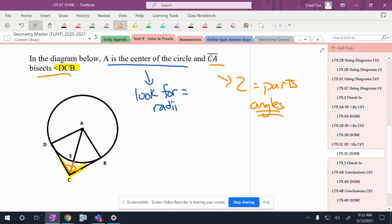A is the center. So I'm looking for radii. Remember, radii goes from the center to the outside. So here's a radius. Here's a radius. Those two things have to be equal to each other. All right, so there's two radii.